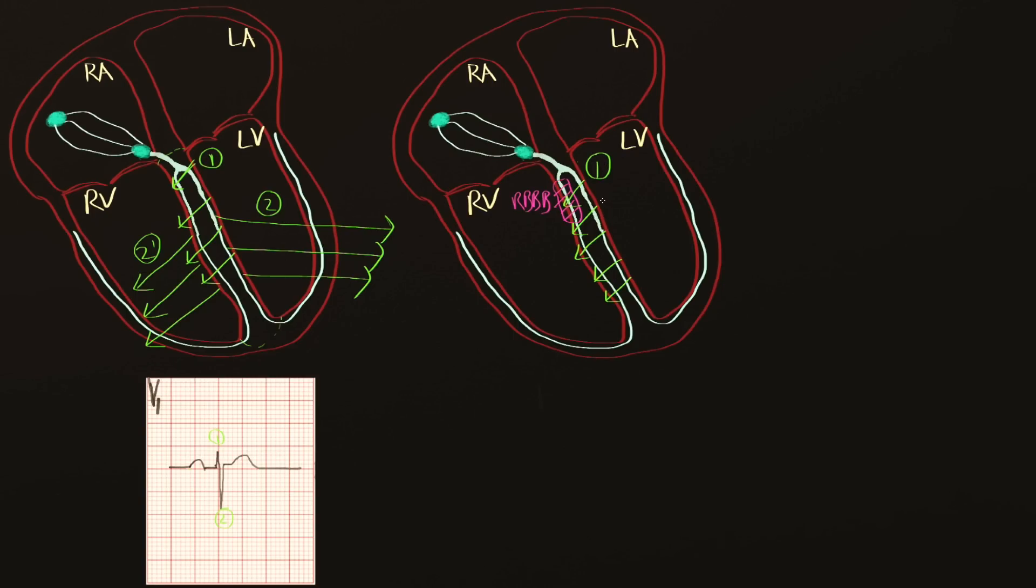We're going to get depolarization of the left ventricle as we did before, but we're not going to get the simultaneous depolarization of the left and right. Maybe I'll change colors just to make this point clear. We're going to get a delayed depolarization coming from the left side of the heart. The left side of the heart is going to depolarize the right ventricle. That's going to be step number three.